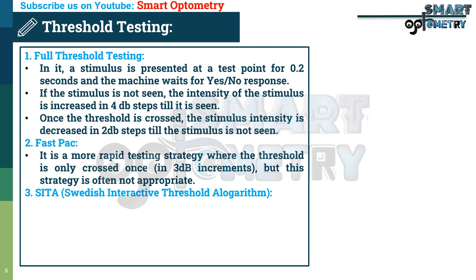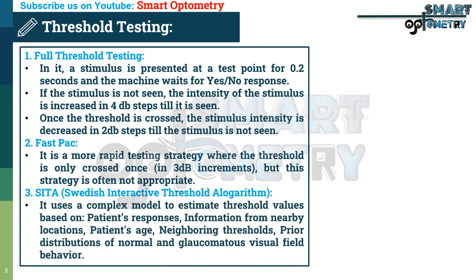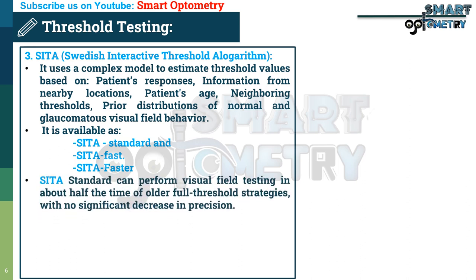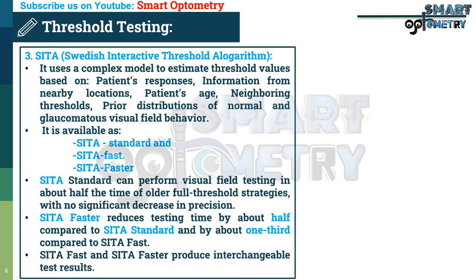SITA stands for Swedish Interactive Threshold Algorithm. It uses a complex model to estimate threshold values based on the patient's response, information for nearby locations, patient's age, neighboring thresholds, and prior distribution of normal and glaucomatous visual field behavior. It is available as SITA Standard, SITA Fast, and SITA Faster. SITA Standard can perform visual field testing in about half the time of older full threshold strategies with no significant decrease in precision. SITA Faster reduces testing time by about half compared to SITA Standard and by about one third compared to SITA Fast. SITA Fast and SITA Faster produce interchangeable test results.